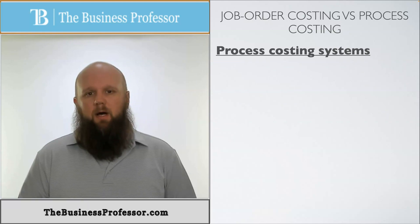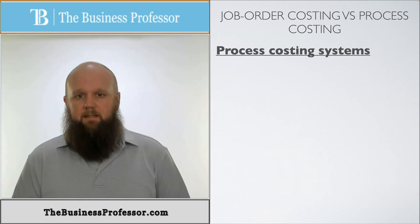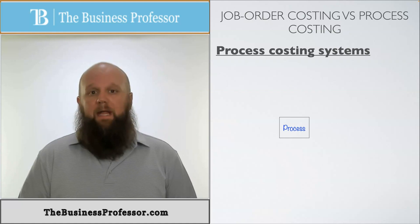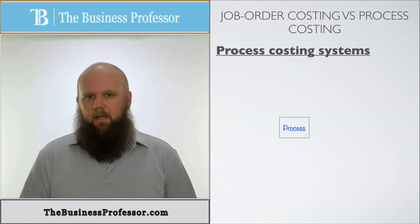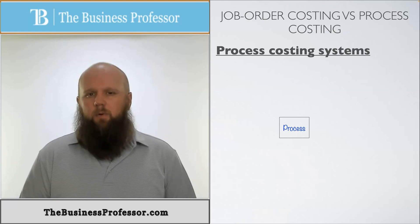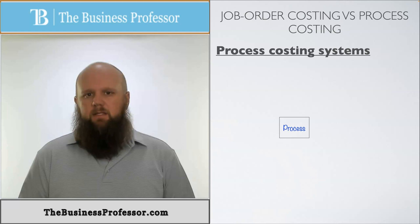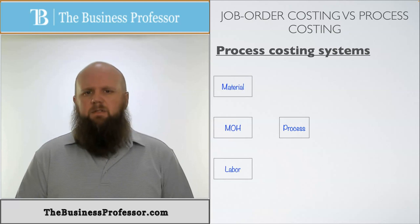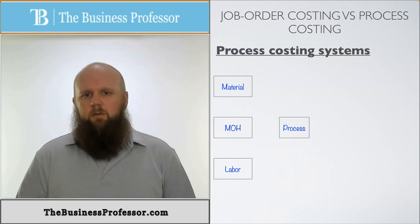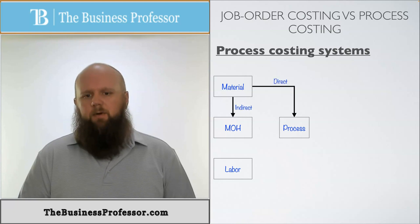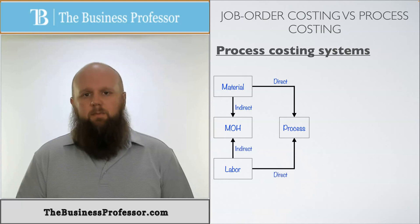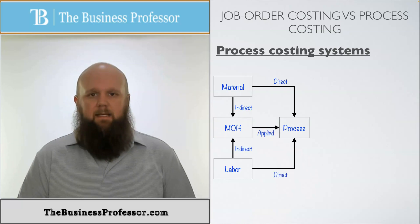Let's look at how this looks from an illustrated standpoint. This time we have a product and it goes into its first process. Let's talk about maybe a bakery and they're building cakes. The first process would probably be the mixing process. In order to mix it, you have to have again three things: you have to have material, you have to have labor, and you have to have some kind of manufacturing overhead. The material is going to be split up into direct and indirect. Labor is going to be split up into direct and indirect. And then manufacturing overhead is going to be applied to the process.